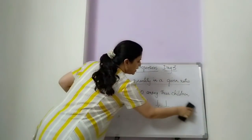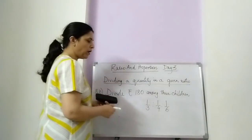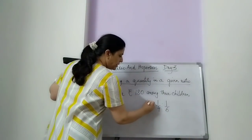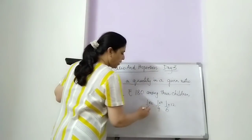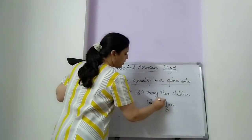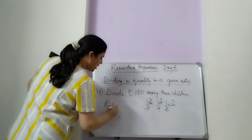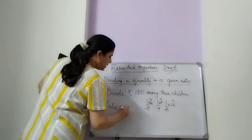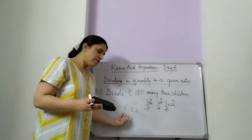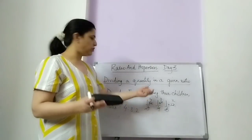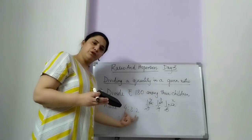So this is the ratio and this is the quantity. The LCM is 12. Multiply 1/3 by 12, 1/4 by 12, and 1/6 by 12. What do you get? 3 fours are 12, 4 threes are 12, 6 twos are 12. So the ratio becomes 4 is to 3 is to 2. The first child gets 4 times the amount, the second gets 3 times. That means 180 is divided in the ratio 4 is to 3 is to 2.